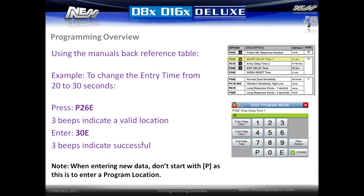Using the manual's back reference table to look up options, an example would be to change the entry time from 20 seconds to 30 seconds. Press P followed by 2, 6 followed by E. Three beeps will indicate a valid location. Enter 30E and three beeps will indicate a successful entry. The value will now be displayed on screen.